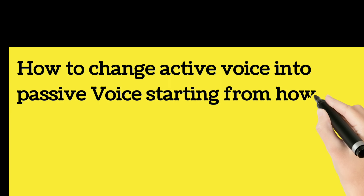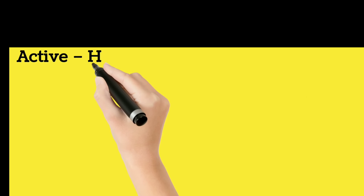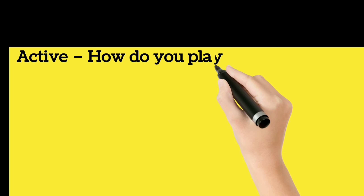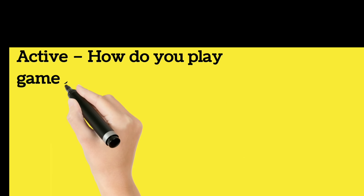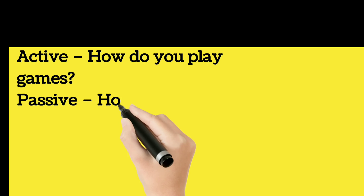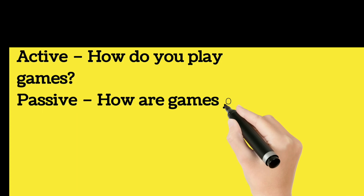How to change active voice into passive voice starting from 'how'. Active: how do you play games? Passive: how are games played by you?